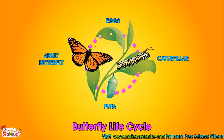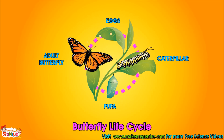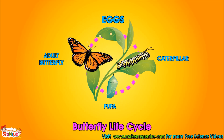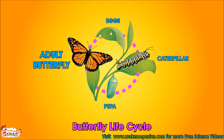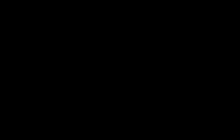Look at this. This shows the complete life cycle of a butterfly. First, these are eggs, then caterpillar, then pupa, and after that, a complete butterfly comes out.